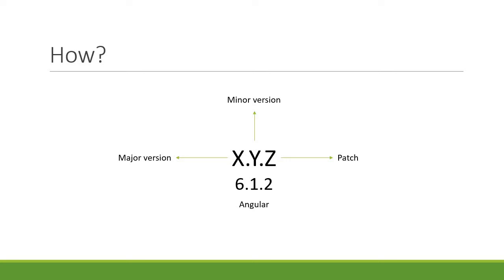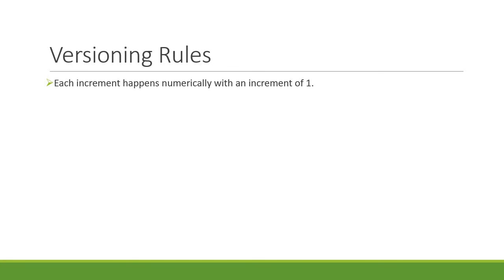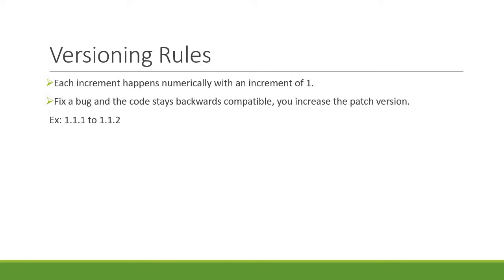The real question is when do we bump up the different version numbers? We can't increment the version by a random number, so here are the rules. Each increment happens numerically with an increment of 1. When you fix a bug and the code stays backwards compatible, you increase the patch version — for example, 1.1.1 to 1.1.2.